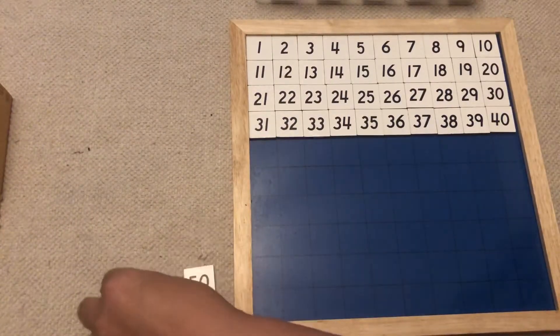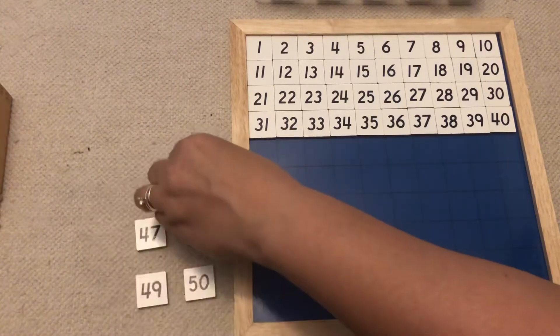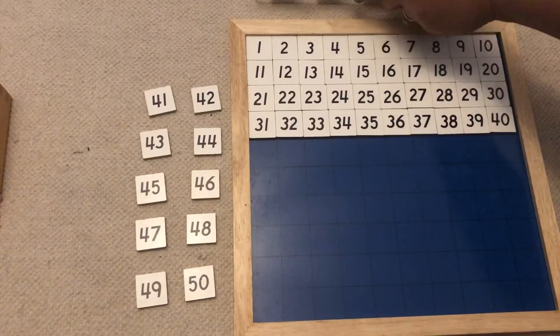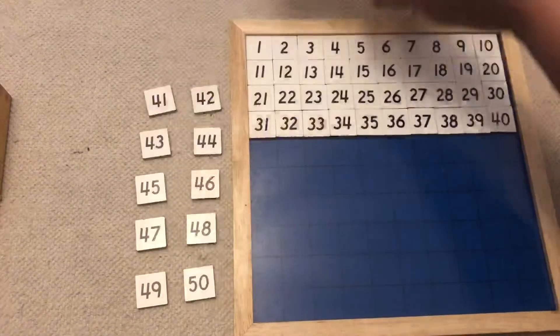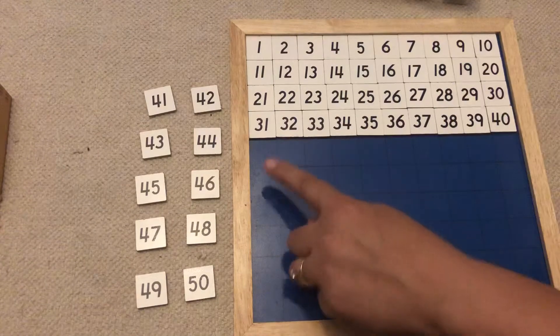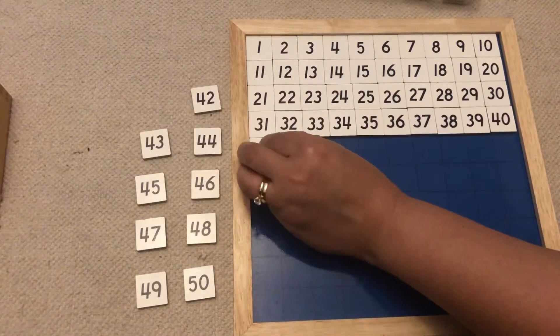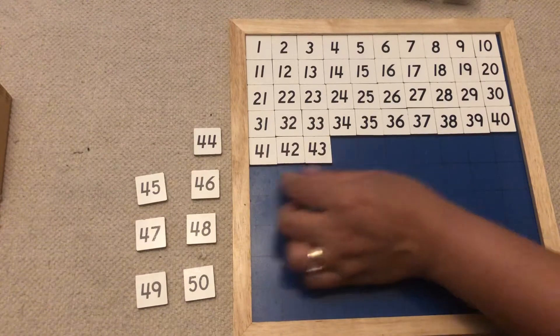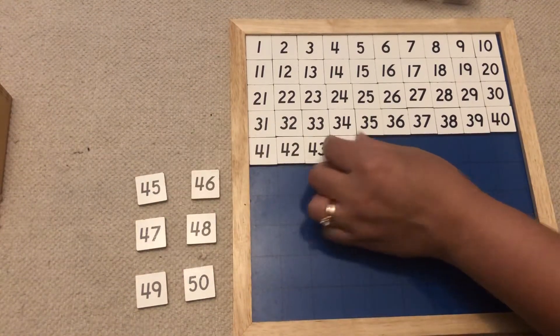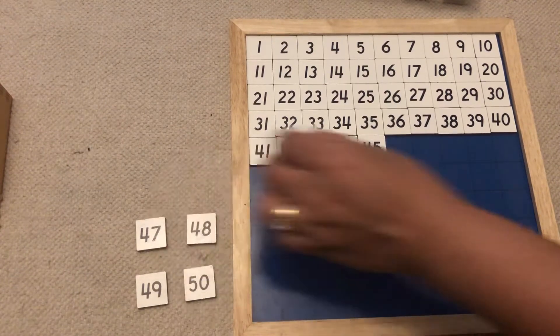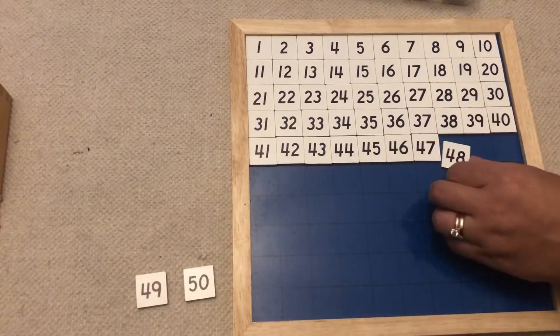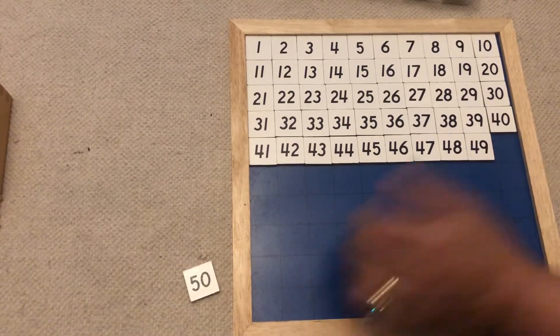Next row. After this row, I can tell I'm halfway done because my container is halfway empty. After 40 comes 41, 42, 43, 44, 45, 46, 47, 48, 49, 50.